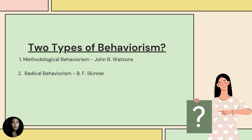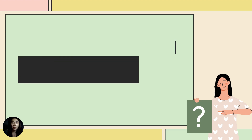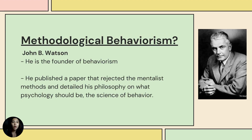There are two types of behaviorism. First is methodological behaviorism, which was influenced by John B. Watson, and radical behaviorism, pioneered by B.F. Skinner. For methodological behaviorism, John Watson was labeled as the founder of behaviorism. He published a paper that rejected mentalist methods and detailed his philosophy that psychology should be the science of behavior.